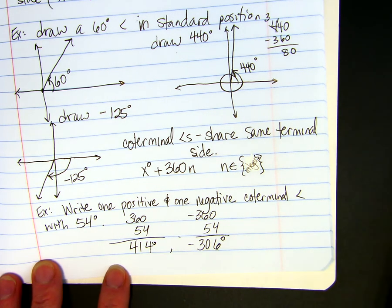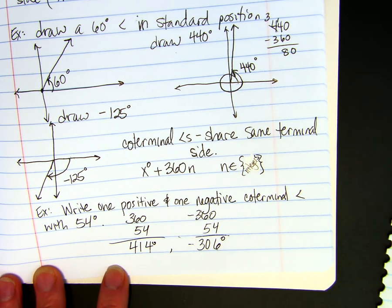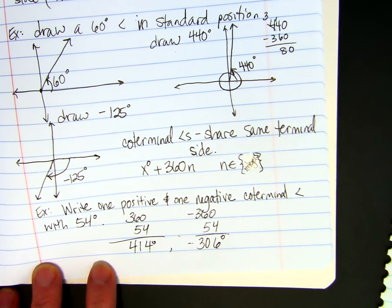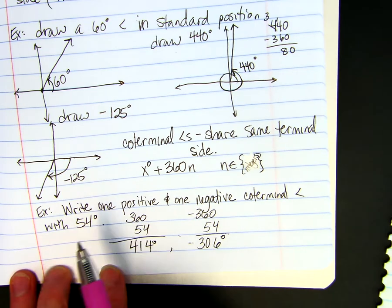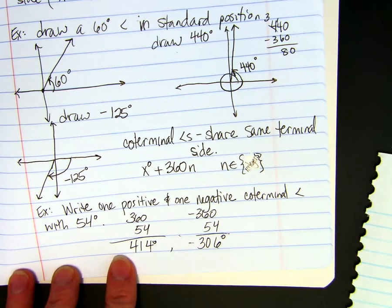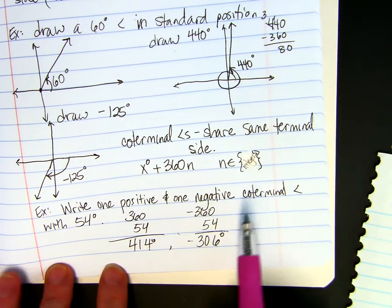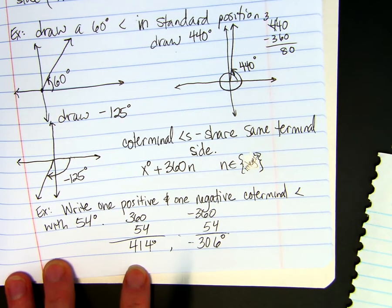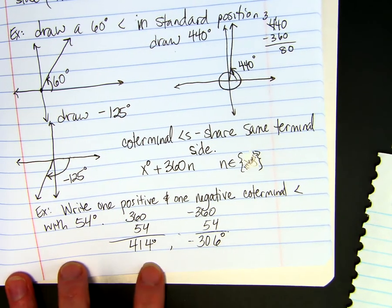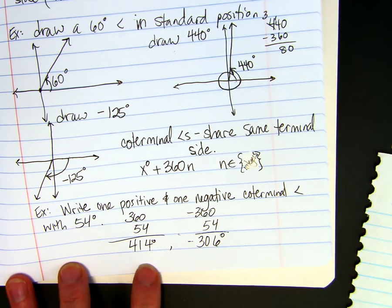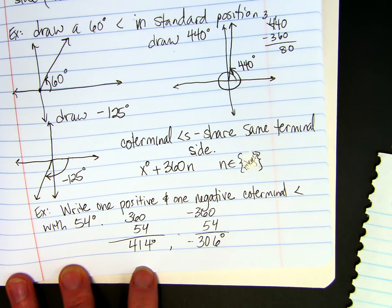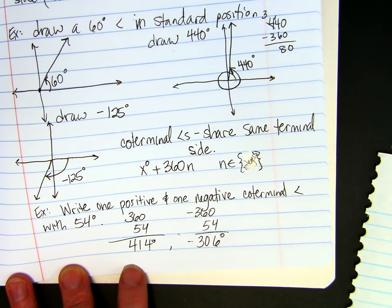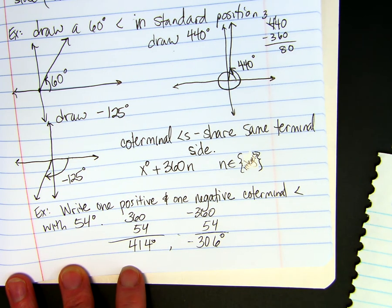Does co-terminal mean that 414 degrees is co-terminal to 54 degrees? Yep. They are co-terminal angles. Co-terminal with, maybe. I think with would probably be better, because that just means they end at the same spot. So what does that mean for 414 is also co-terminal with negative 306? Yes. Very good.